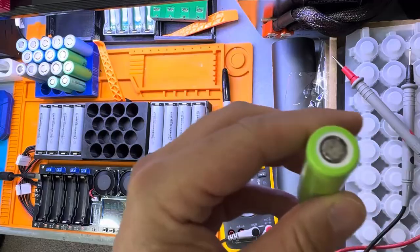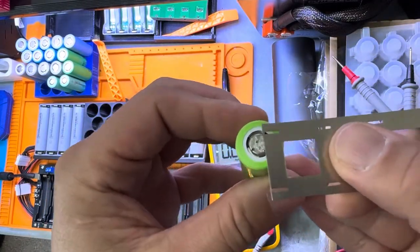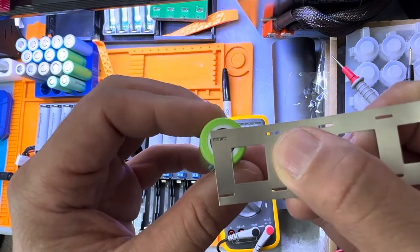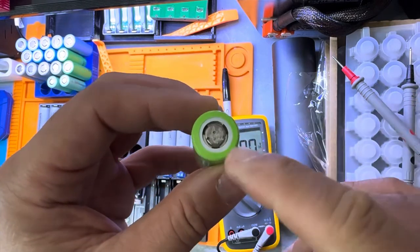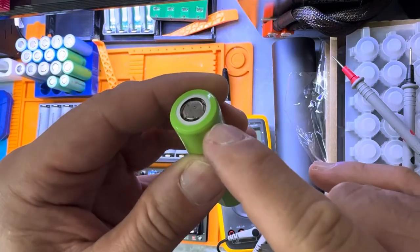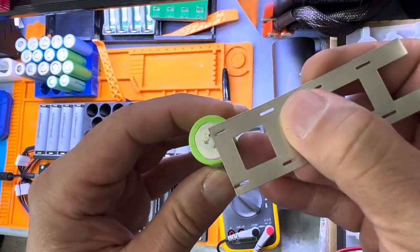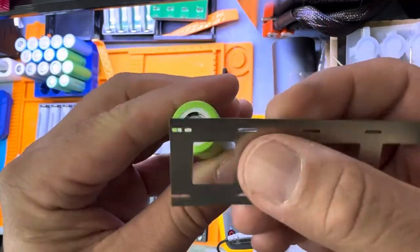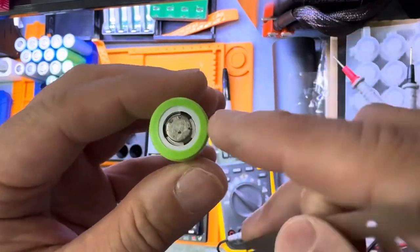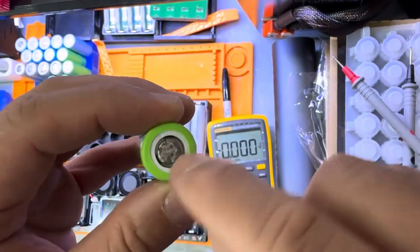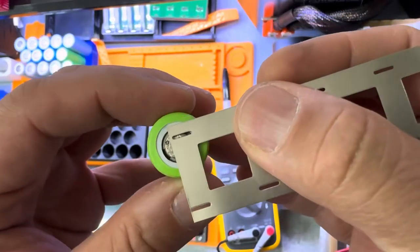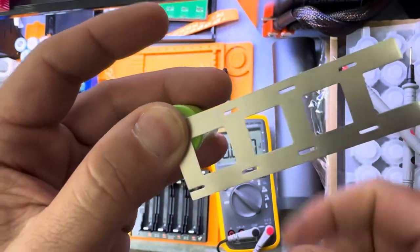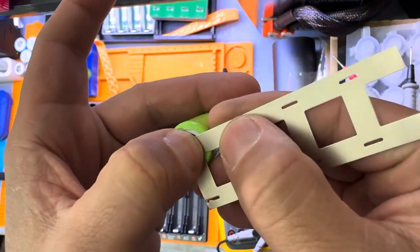Here's what happens when we spot weld. The positive side is the most critical side, and the reason is because we have positive and negative on the same side. On negative we have only negative, that's not a problem. But here is the problem. I don't have the insulator ring right now, but anyway, when we spot weld here and we get close to the outside...